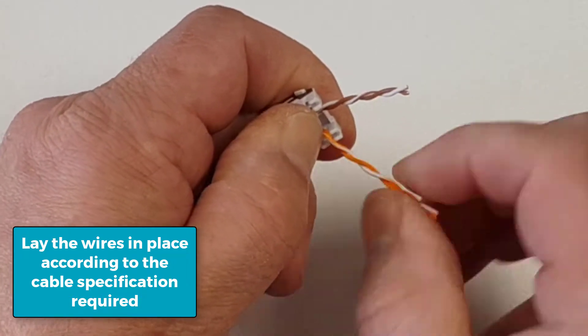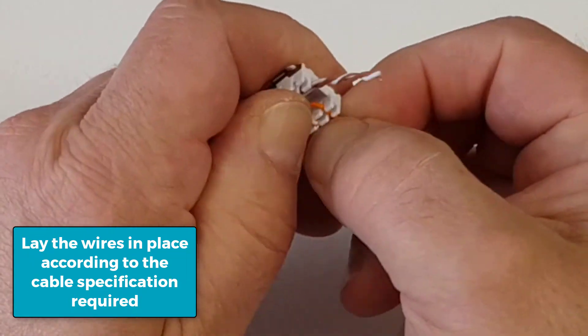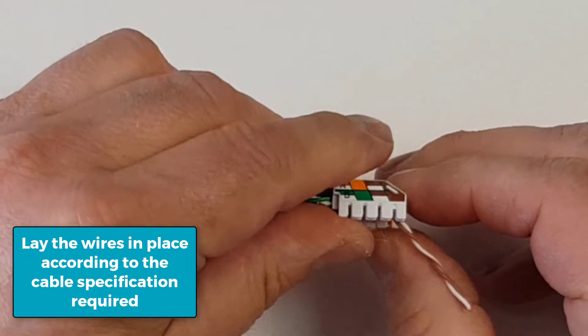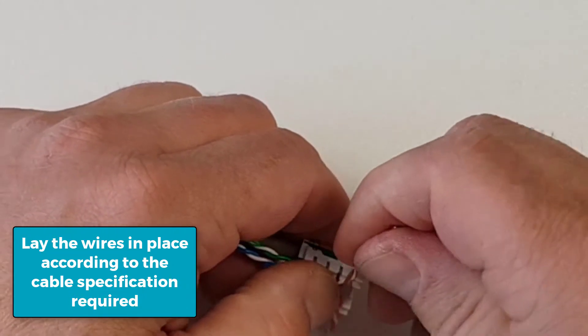Just gently open up the twists and put those into place there. And on the other side we have got brown at the front and white brown at the back.